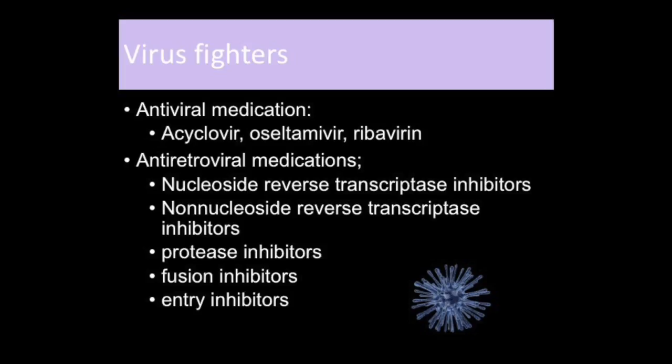Acyclovir is used to treat herpes, chickenpox, and shingles. Oseltamivir is commonly used for influenza, and ribavirin is used in treating hepatitis C and RSV (respiratory syncytial virus). Retroviruses are different because they have an RNA blueprint, which allows the genetic material from a retrovirus to become a permanent part of the gene of an infected cell. HIV is a retrovirus. AIDS patients may take multiple medications according to a specific regimen to fight this retrovirus, prevent its reproduction, and protect their own immune system.